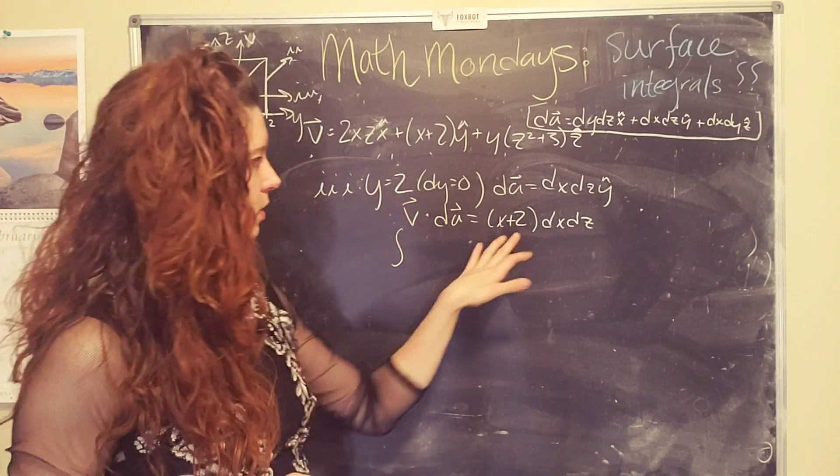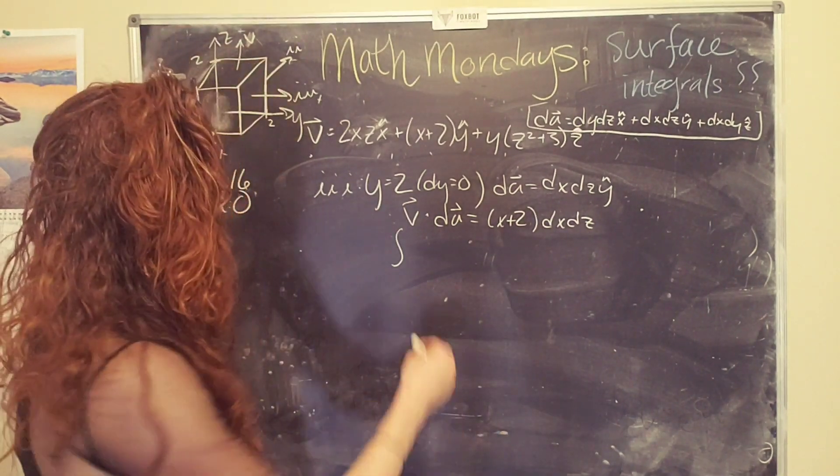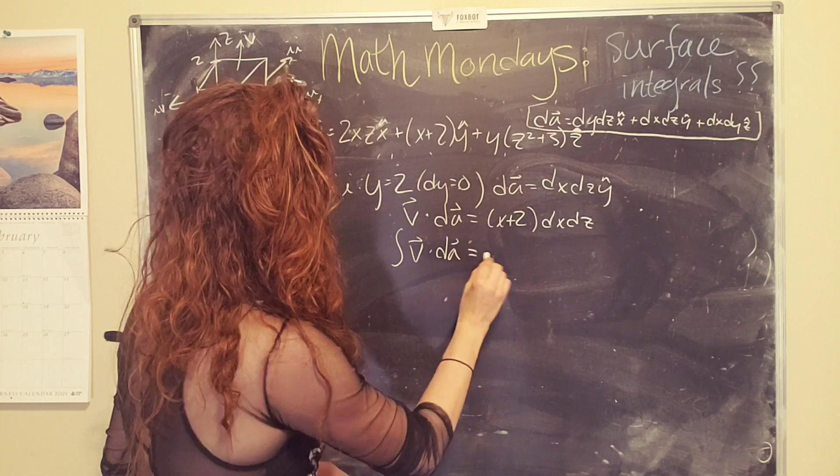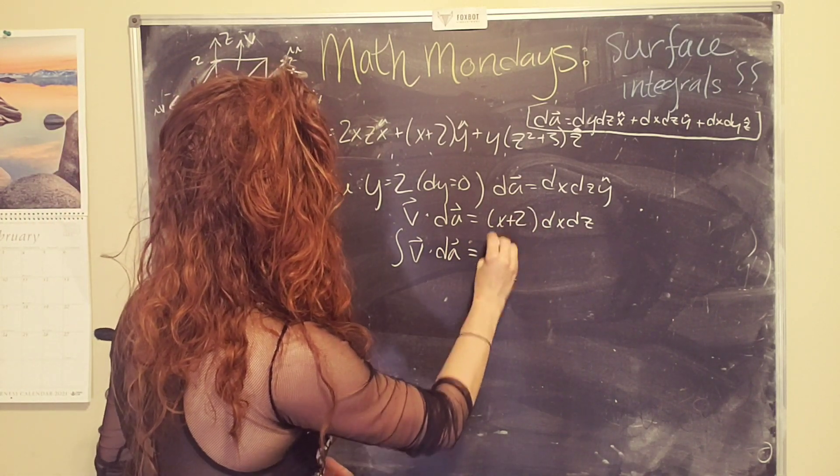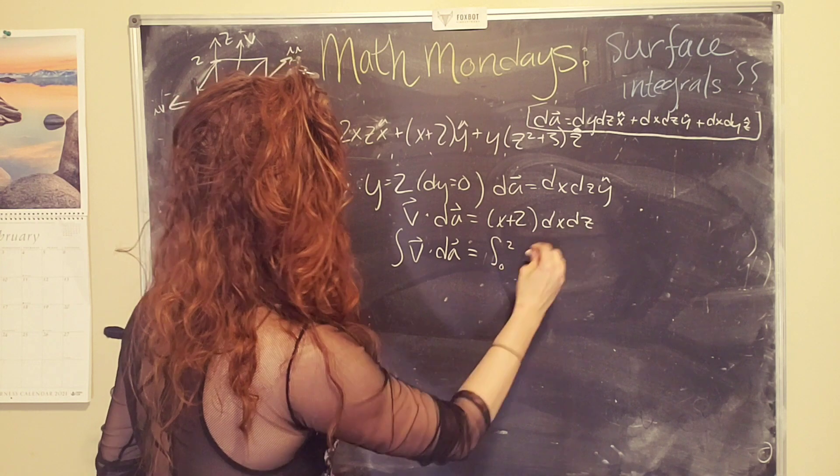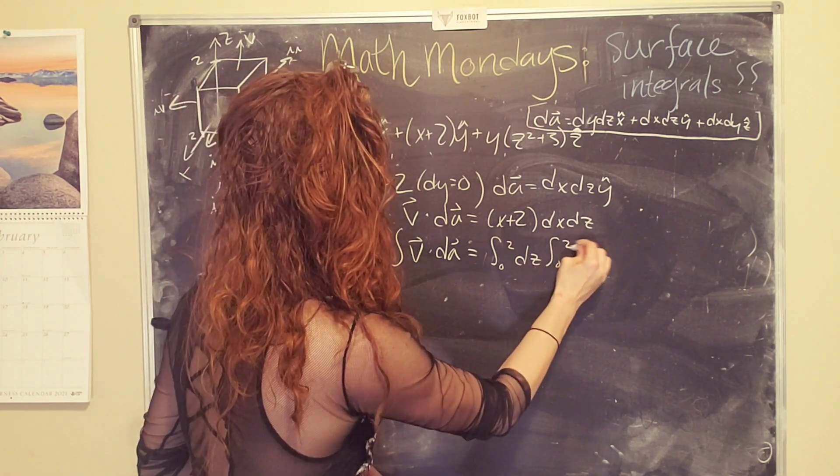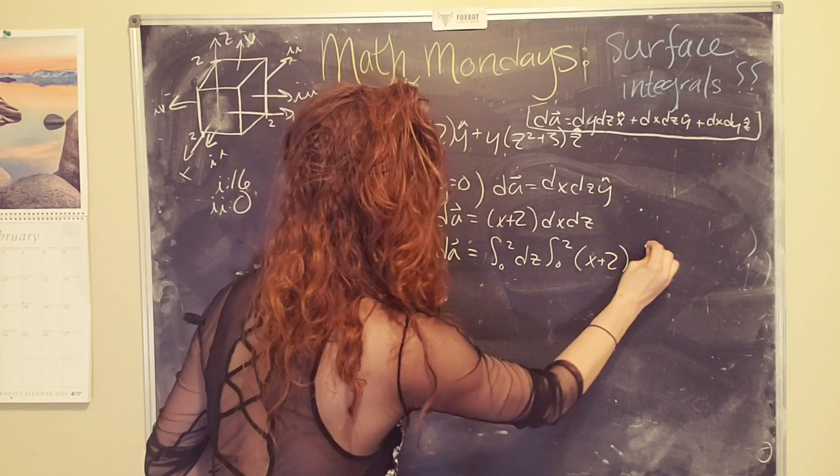Okay. And so y equals two. There's no y that shows up here. Can't do anything with that. That's okay. v dot dA becomes, the integral from zero to two of dz. Let's put the easier one first. And then the integral from zero to two of (x + 2) dx. Okay.